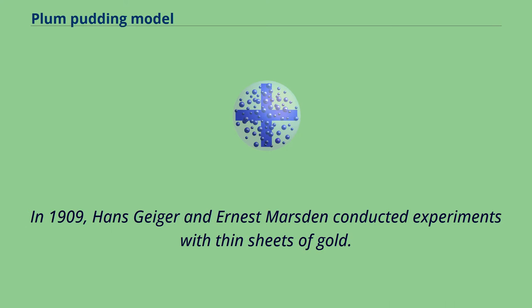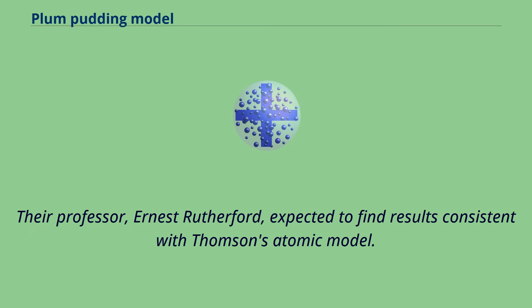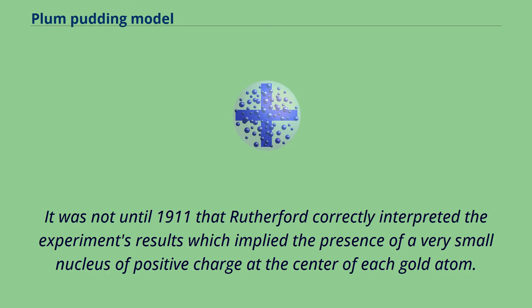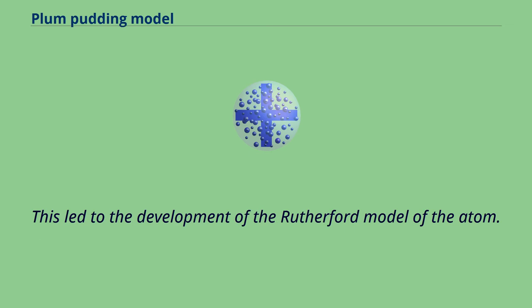In 1909, Hans Geiger and Ernest Marsden conducted experiments with thin sheets of gold. Their professor, Ernest Rutherford, expected to find results consistent with Thomson's atomic model. It was not until 1911 that Rutherford correctly interpreted the experiment's results, which implied the presence of a very small nucleus of positive charge at the center of each gold atom. This led to the development of the Rutherford model of the atom.